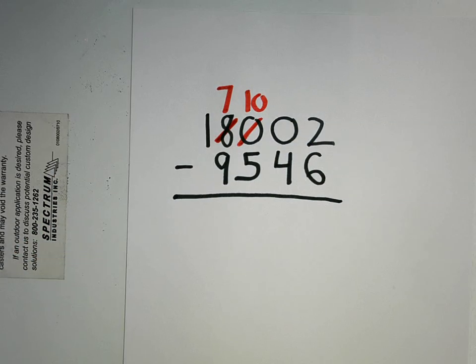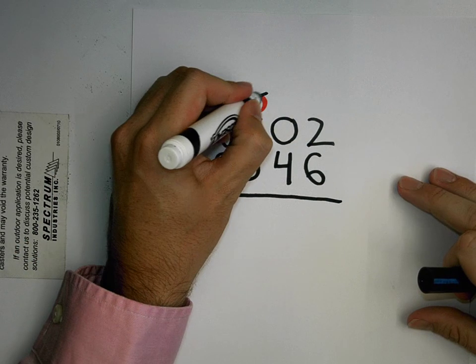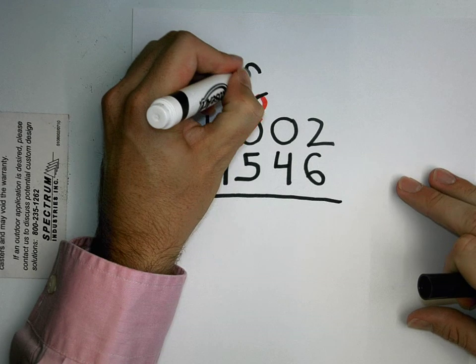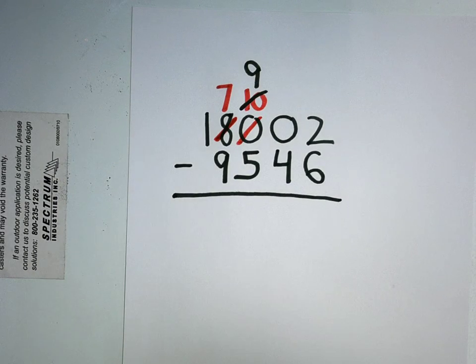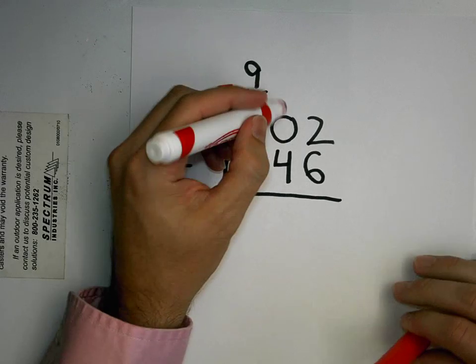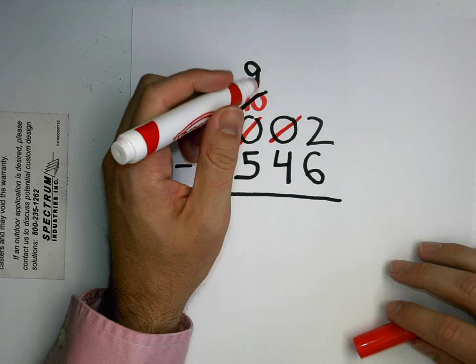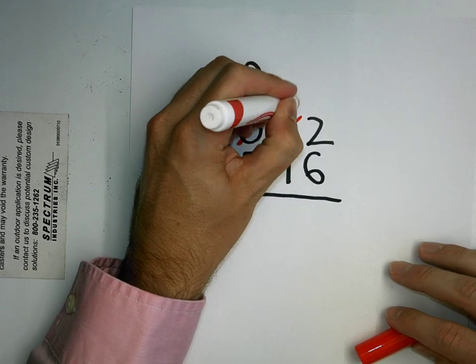So I'm going to cross this. So instead of ten hundreds, I now have nine hundred. And then when I move that over, instead of zero tens, I now have ten tens.